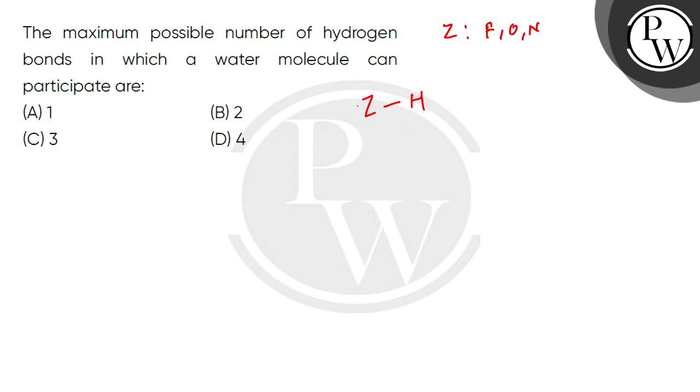So electronegativity is high. What happens with hydrogen? The difference will be created with hydrogen. So Z will be negative and H will be positive.